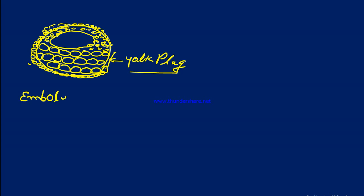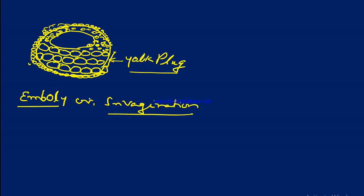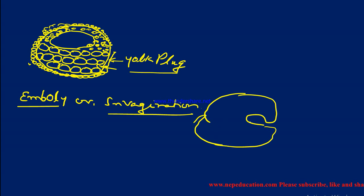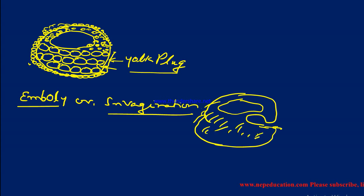After epiboly, the next step begins — emboly, also known as invagination. In invagination, one part moves inward. There is migration happening towards the blastocoel, or you can say towards the animal hemisphere. The cells migrate inward towards the animal hemisphere.